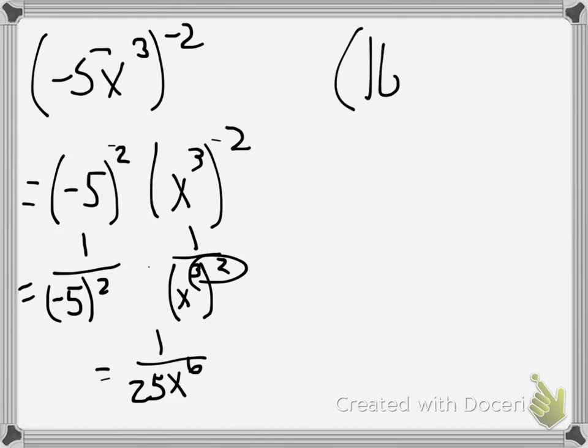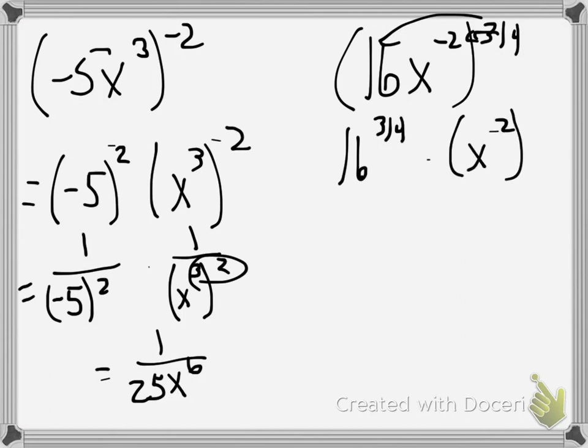Let's look at another one. Now, 16x to the negative 2 raised to the 3/4ths power. So again, I'm going to take that 3/4ths and I'm going to distribute it to both terms of the product. So I'll do 16 to the 3/4ths, and I'll multiply that by x to the negative 2 raised to the 3/4ths.